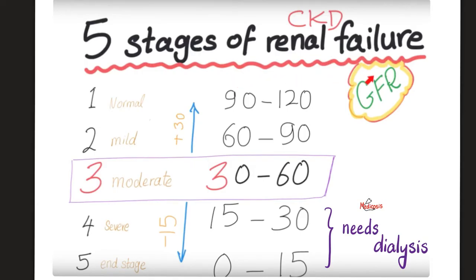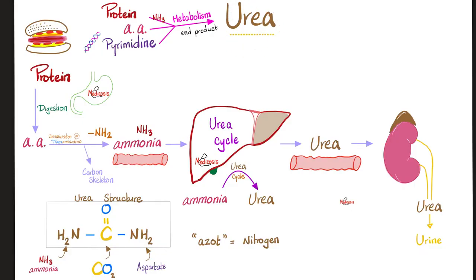As my kidney fails, my GFR deteriorates. When it gets so bad, I will need dialysis. Acute kidney injury is usually reversible, but chronic renal failure is not. Where did you get urea in your blood — the blood urea nitrogen — from? I got it from the urea cycle.